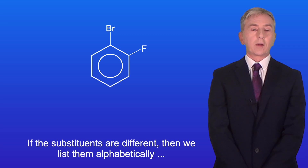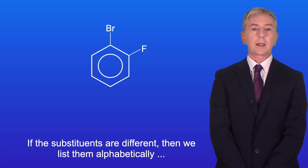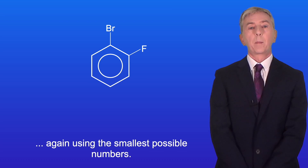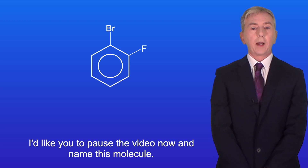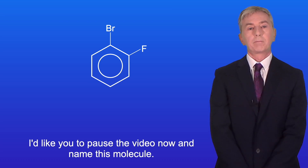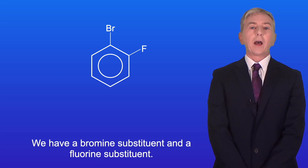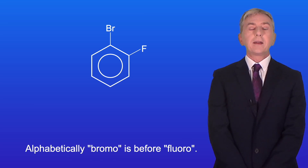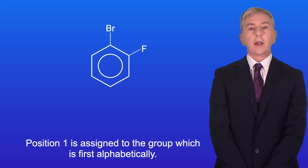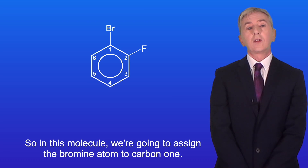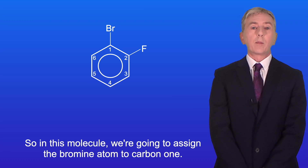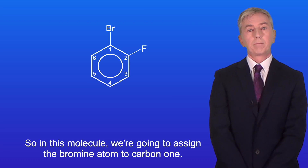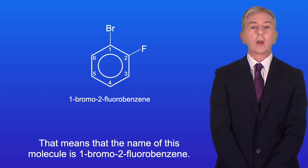If the substituents are different, then we list them alphabetically, again using the smallest possible numbers. For example, with a bromine substituent and a fluorine substituent: alphabetically, bromo comes before fluoro. Position 1 is assigned to the group which is first alphabetically, so we assign the bromine atom to carbon 1. That means the name of this molecule is 1-bromo-2-fluorobenzene. Notice that this does not depend on how we draw the molecule — both diagrams show the same molecule.